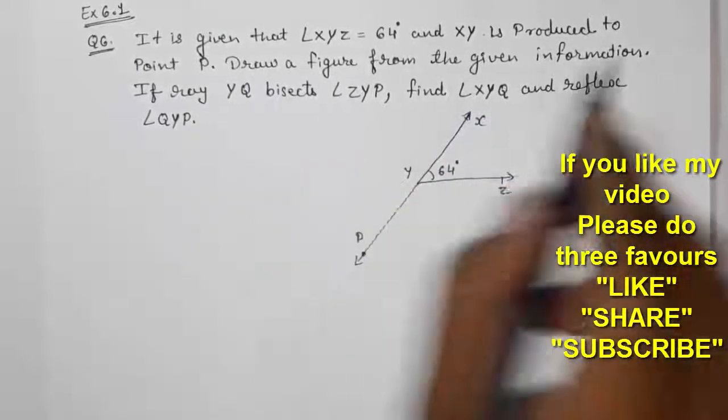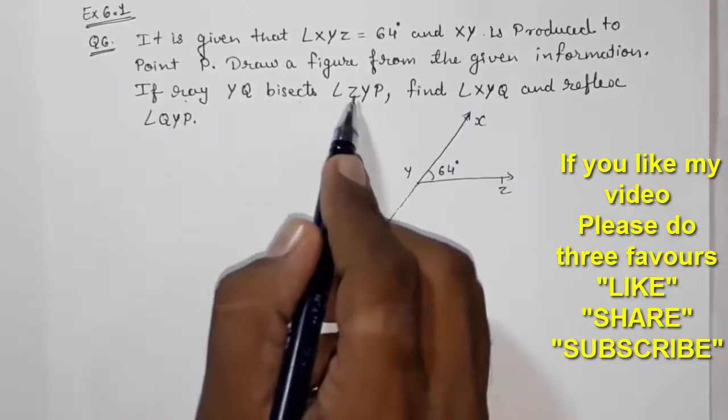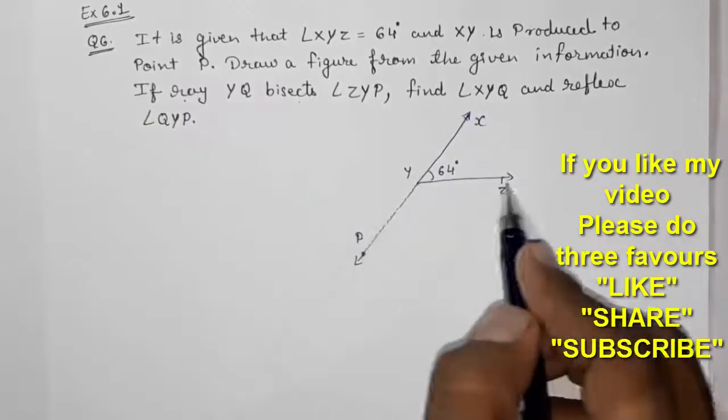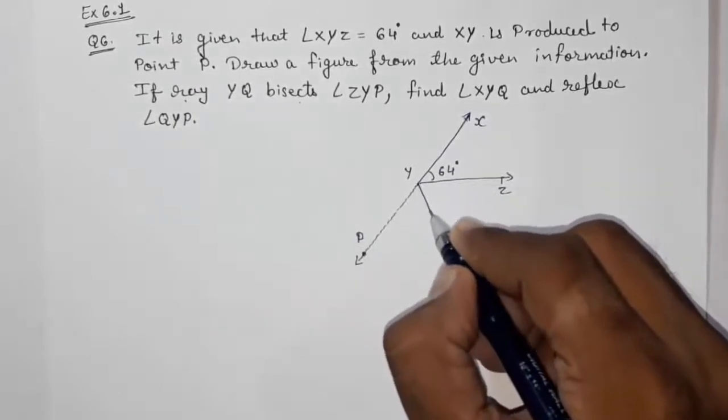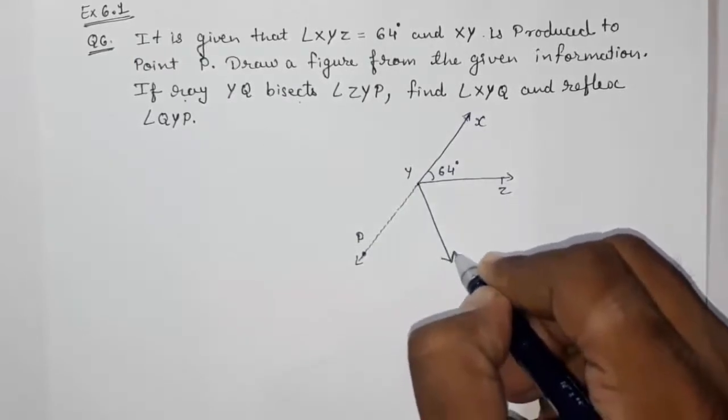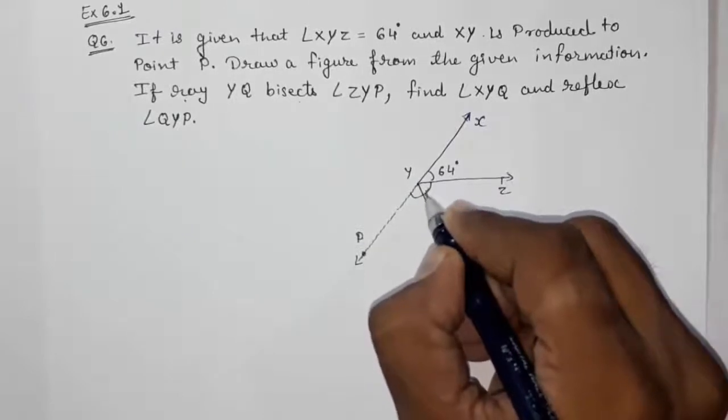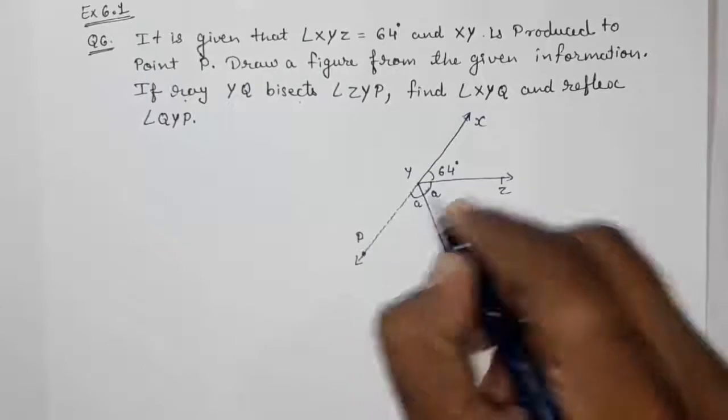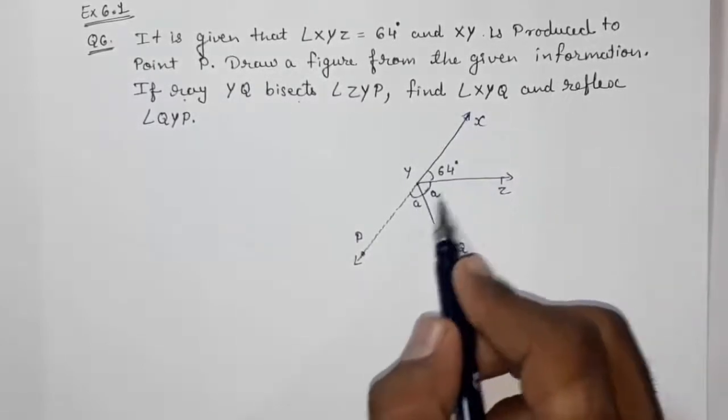Then draw the figure from the given information. If ray YQ bisects angle ZYP, ZYP and YQ is bisecting this ZYP. So this will come here. This will be YQ because this YQ is bisecting ZYP. We know both angles are equal. I am going to give this angle name A. I am not giving X because X is there, so I am going to give A.